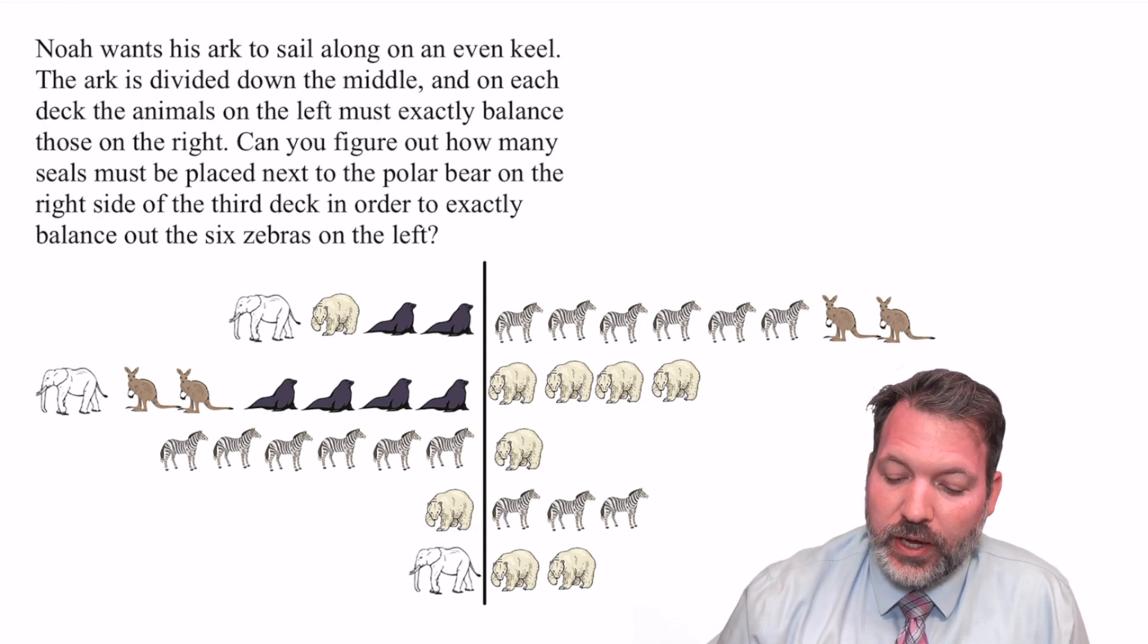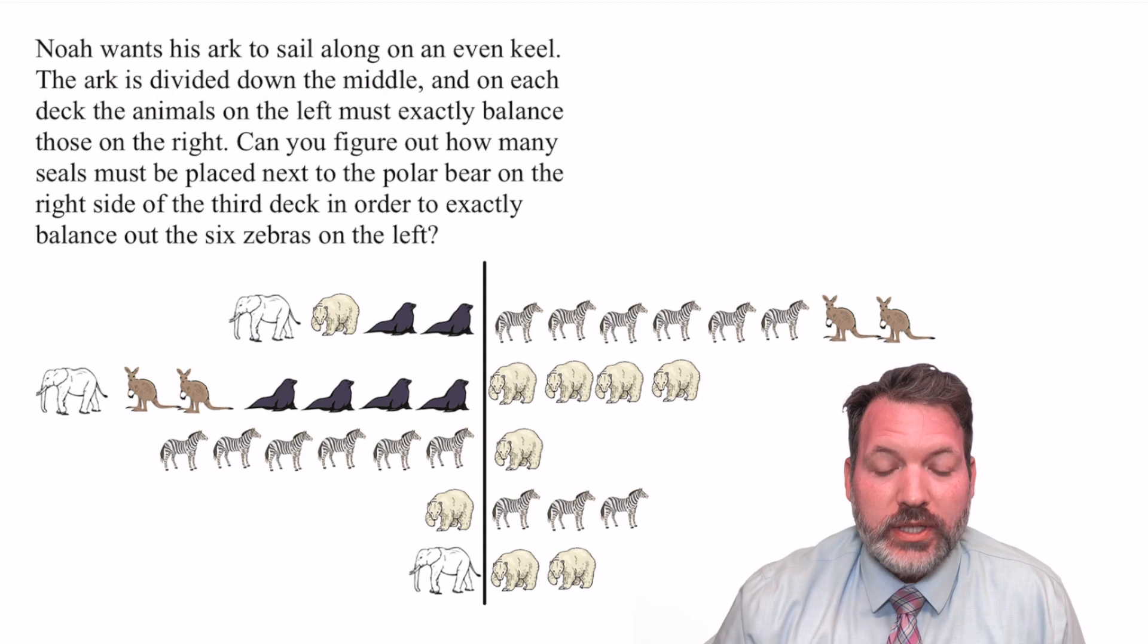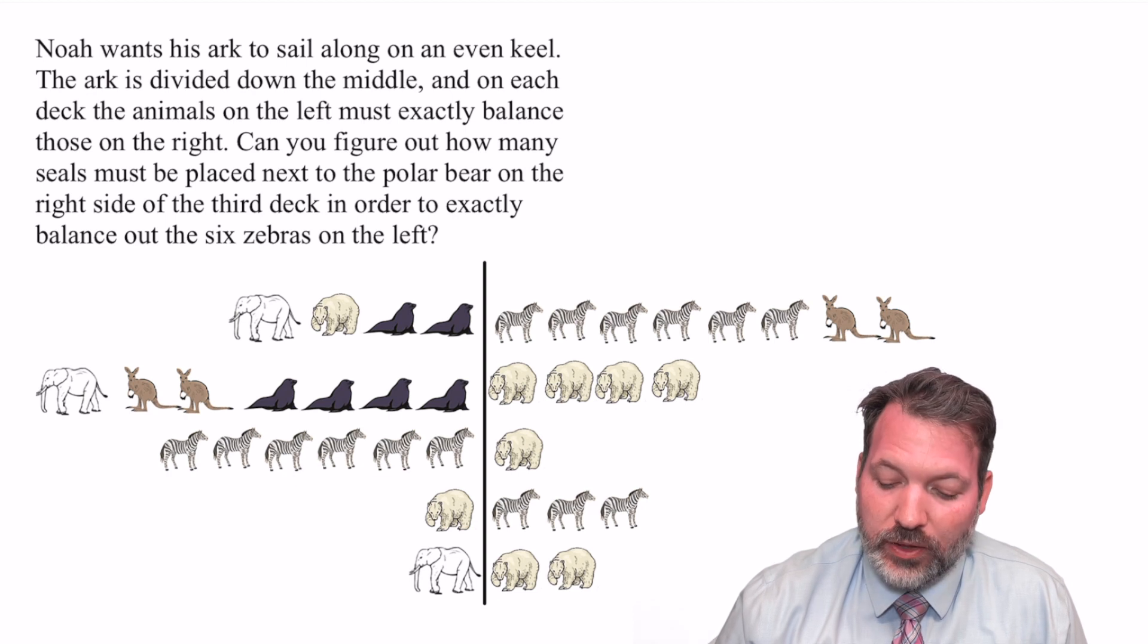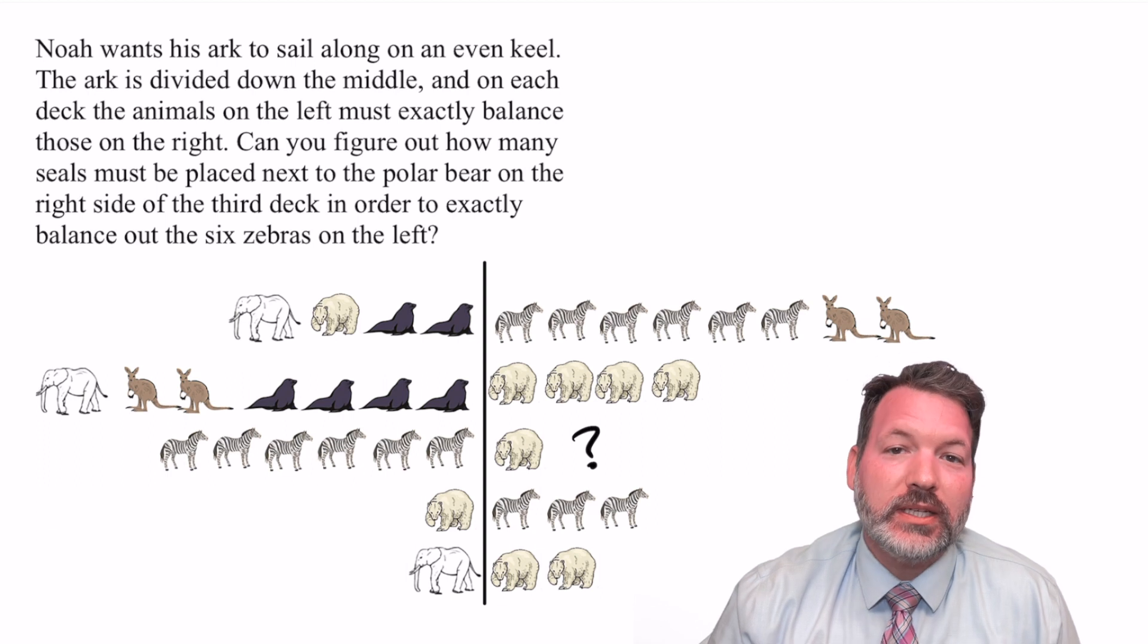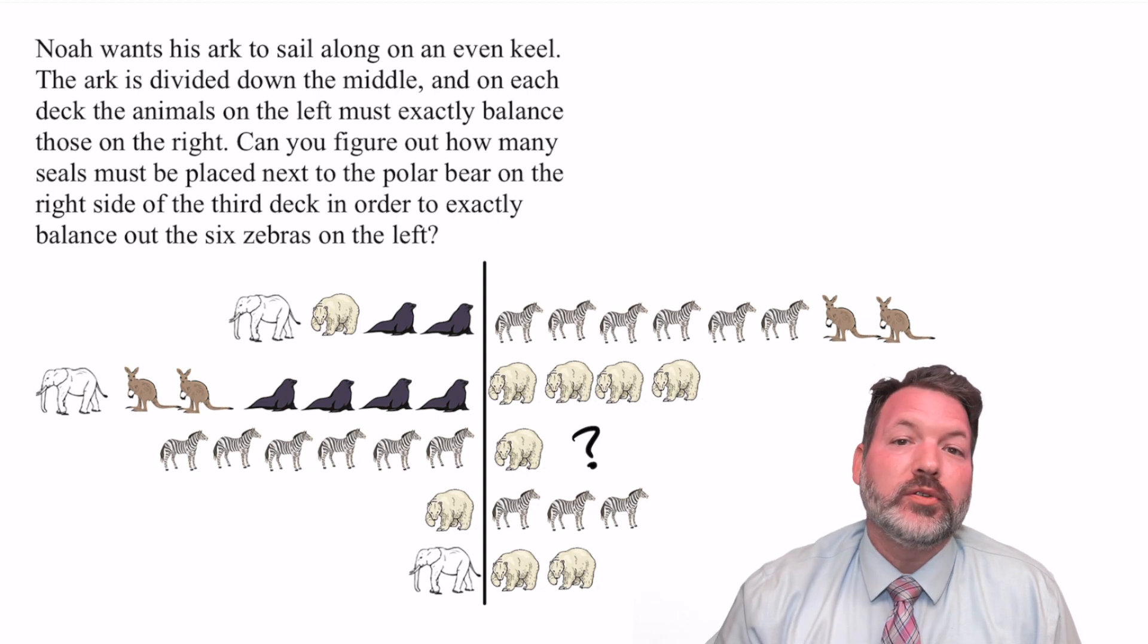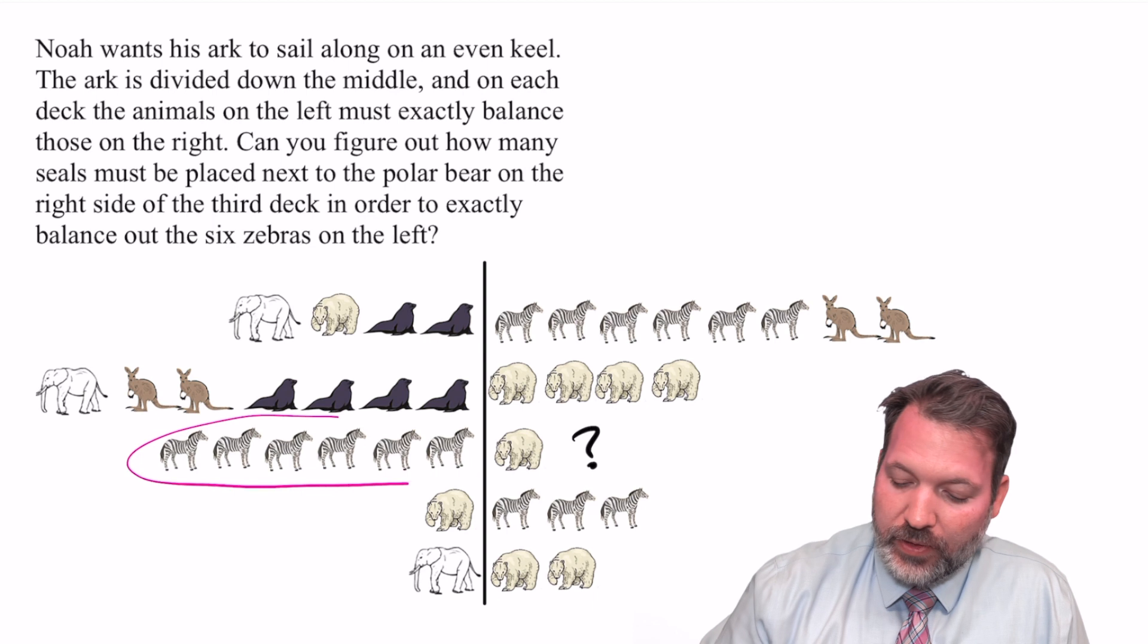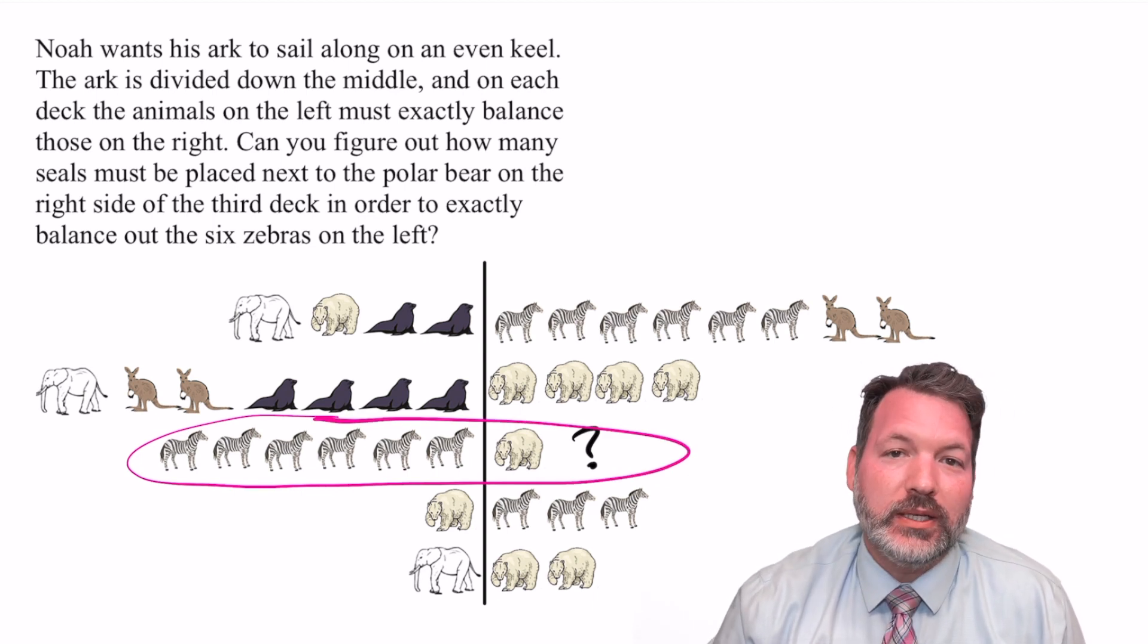Noah wants his ark to sail along on an even keel. The ark is divided down the middle, and on each deck the animals on the left must exactly balance those on the right. Can you figure out how many seals must be placed next to the polar bear on the right side of the third deck in order to exactly balance out the six zebras on the left?